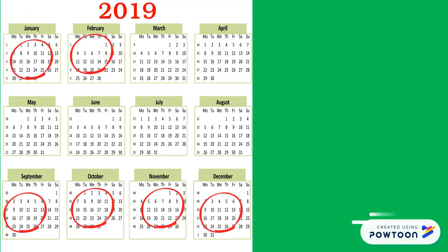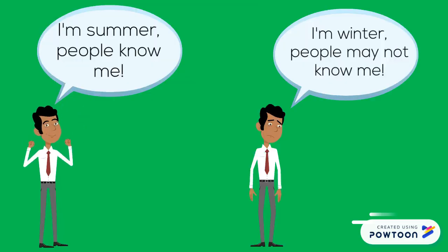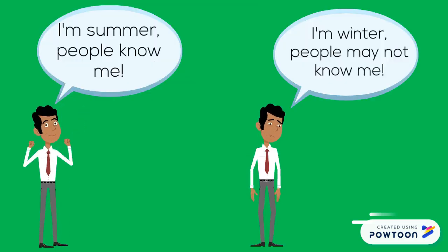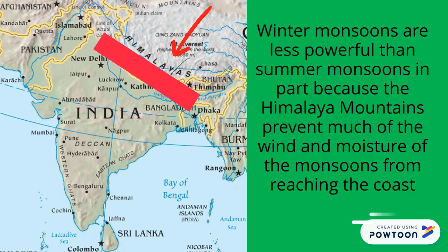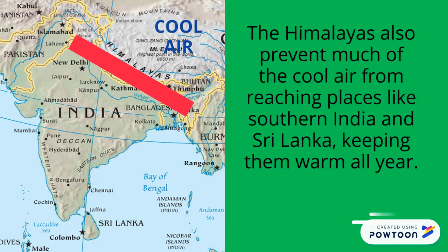The winter monsoon, which lasts from October to April, is less well known than its rainy summer equivalent. The winter monsoons are less powerful than summer monsoons in part because the Himalaya mountains prevent much of the wind and moisture of the monsoons from reaching the coast. The Himalayas also prevent much of the cool air from reaching places like southern India and Sri Lanka, keeping these places warm all year.